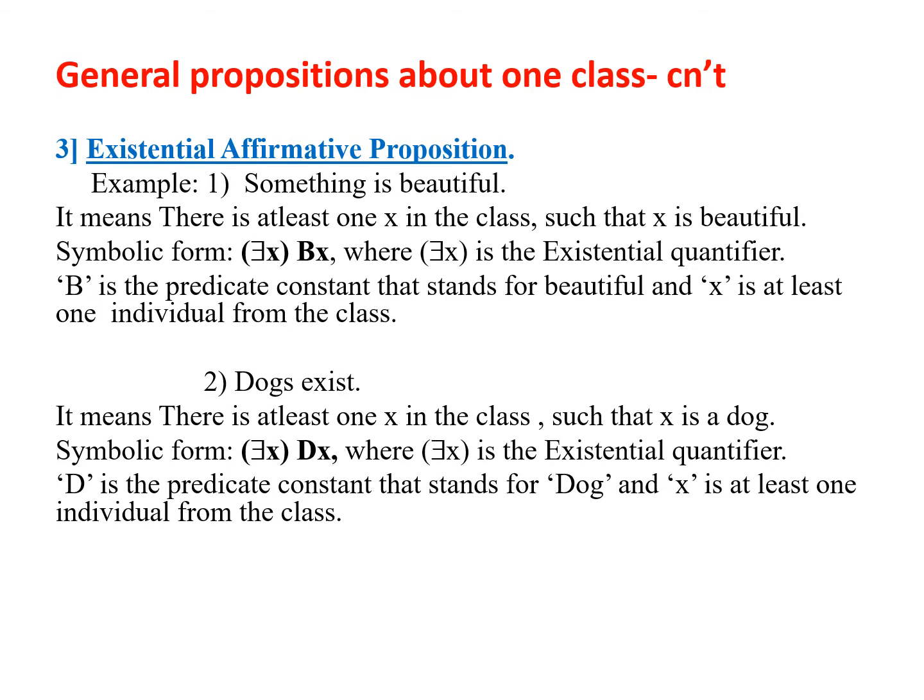Another example: 'Dogs exist' means there is at least one x such that x is a dog. The symbolic form is existential quantifier, capital D, small x — where the existential quantifier is the laterally inverted E in the bracket, capital D is the predicate constant for 'dog,' and x is the individual from part of the class.